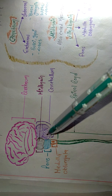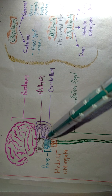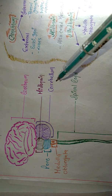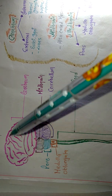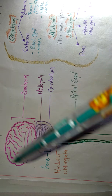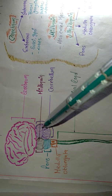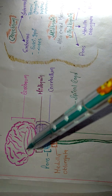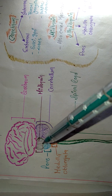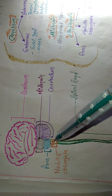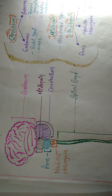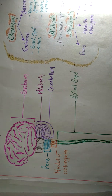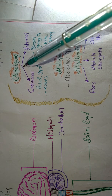After the medulla oblongata, this long green portion is the spinal cord. Beside the midbrain and beside the pons we have the cerebellum. Don't confuse between cerebrum and cerebellum — cerebrum is the biggest and uppermost part of the brain, while the cerebellum is situated beside the midbrain and pons. So to recap: cerebrum, midbrain, pons, medulla oblongata, spinal cord, and cerebellum beside the midbrain and pons.